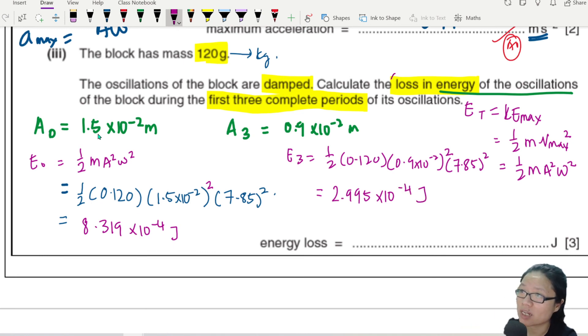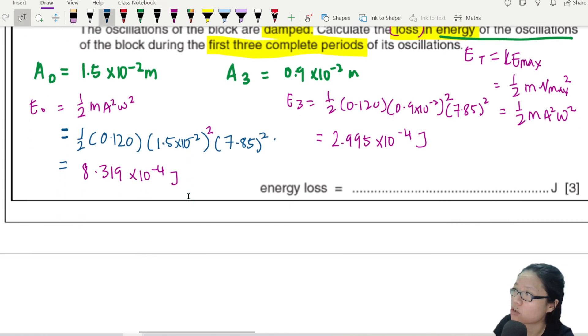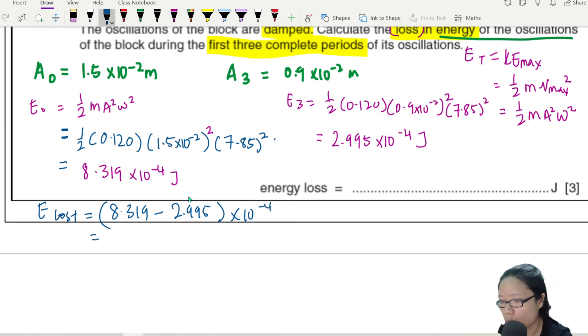So this one is 8.319 times 10 to the power of negative 4 joule. E3 would be, I'll change this to 0.9. This one would be 2.995. So I'll give you an example of someone who writes many significant figures. This is not the final answer. You want the loss in energy. So I'm going to take E0 minus E3. I don't need to take final minus initial. Just want the loss or the change. So energy loss will be equal to 8.319 minus 2.995 times 10 to the power of negative 4. That would be 5.324. And if you want to write 3 significant figures, you can feel free. I'm going to stick to 2. 5.3 times 10 to the power of negative 4 joule.